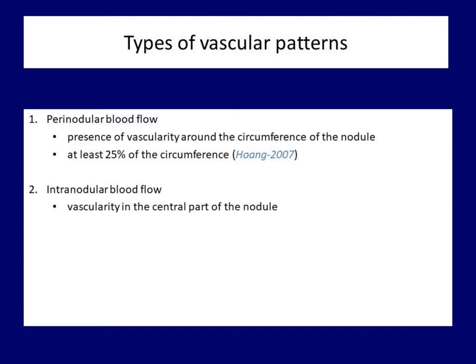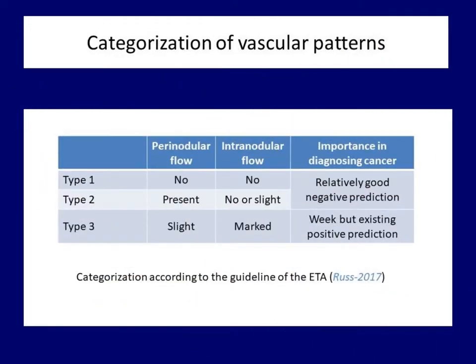The second type of flow can be observed in the central part of the nodule, and this is called intranodular vascularity. In contrast with the former, there is no definition in the literature for intranodular blood flow — one can speak of intranodular blood flow even if a single red spot is found. This minimal blood flow surely has a different meaning compared with the chaotic, hugely increased vascularity. Not all professional bodies deal with the circulation of nodules; for example, the American College of Radiology does not mention nodule vascularity.